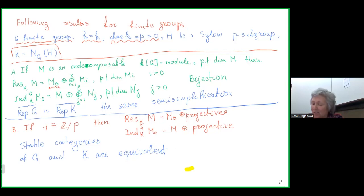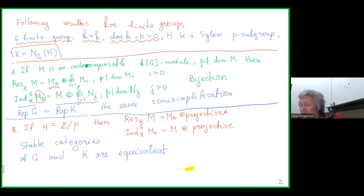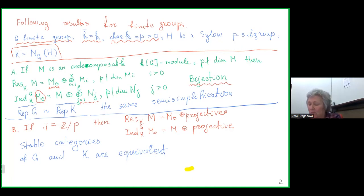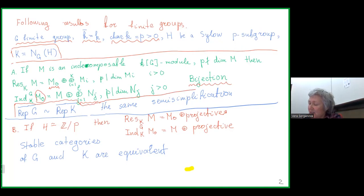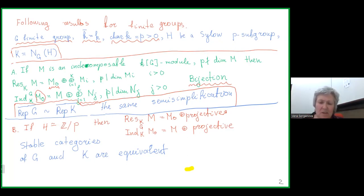Similarly, if I do induction starting with an indecomposable representation M₀ of K such that p does not divide dim(M₀), I get back M plus a bunch of indecomposable representations of G whose dimension is divisible by p. In this way we actually have a bijection between indecomposable representations of non-p-divisible dimension between G and K. For people who know tensor categories, this implies that the semi-simplifications of these tensor categories are equivalent.